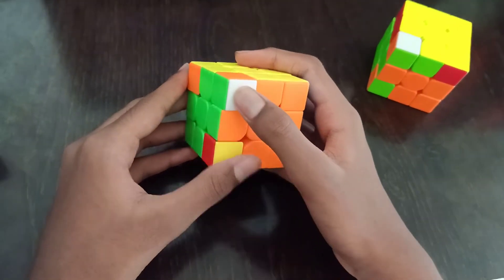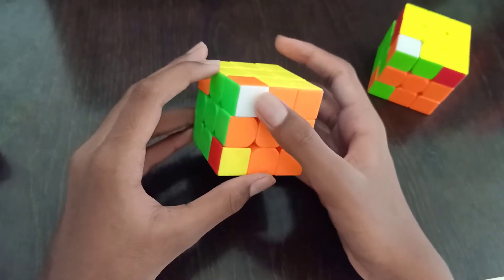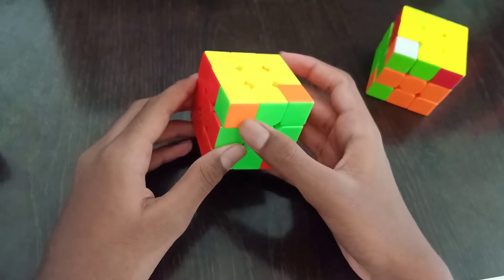For the second case, we have the white color on the front, that is the bottom color. To do this, we have to do this from this angle.